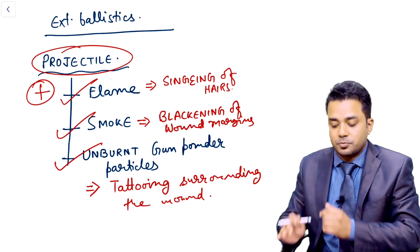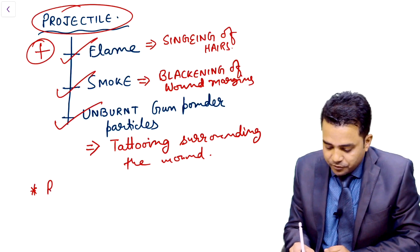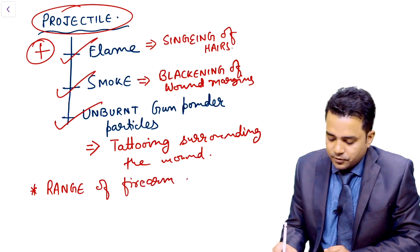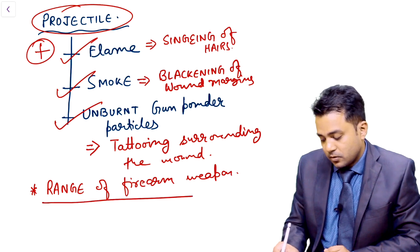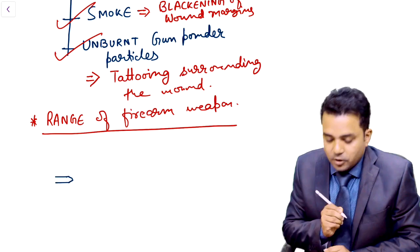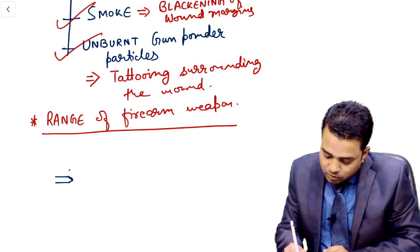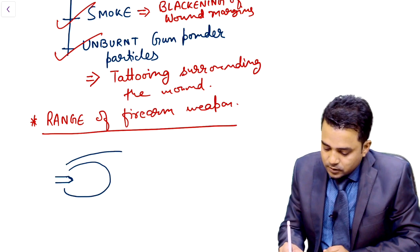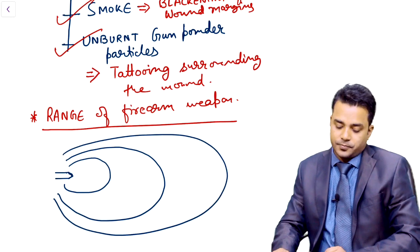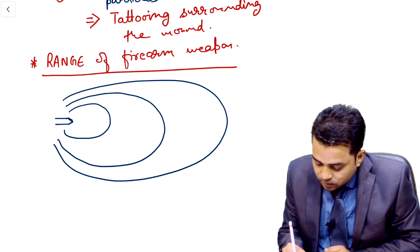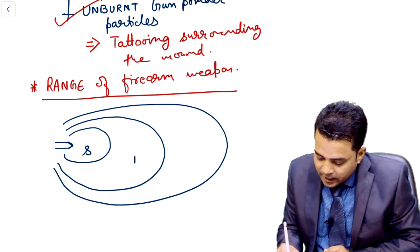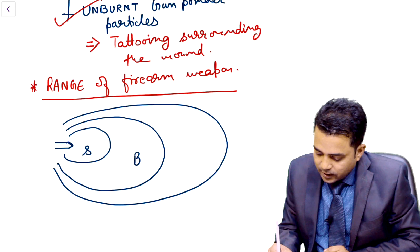Your questions are asked from the topic of range of firearms used. Let us make a figure. If a bullet is coming out, along with the bullet, what will come out is flame, then there will be smoke, and then there will be an area of tattooing. So you have singeing, blackening, and tattooing.